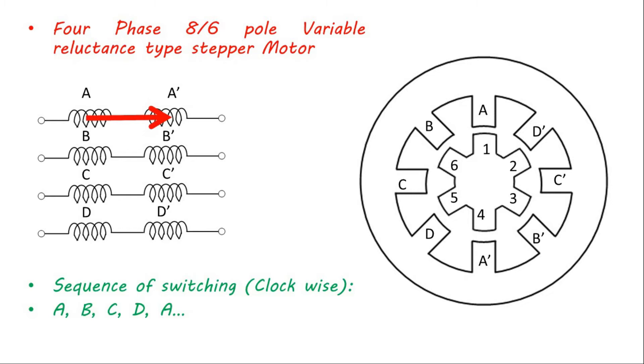When phase A is switched on, the equilibrium position of the rotor is shown here. In this position, flux travels through a minimum reluctance path using rotor pole 1 and 4. This is a stable position of the rotor.